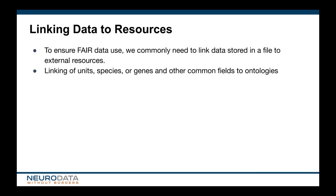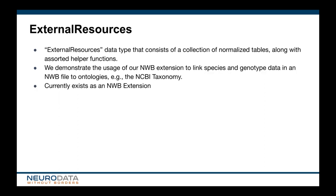In terms of tools that exist in NWB, it could be linking of units, species, genes, or other common fields to ontologies. For example, to describe the species of a subject, a user may use a broad range of terms — 'human' or 'homo sapiens'. To avoid ambiguity and enable search of data across files, we need to unambiguously define the meaning of such terms.